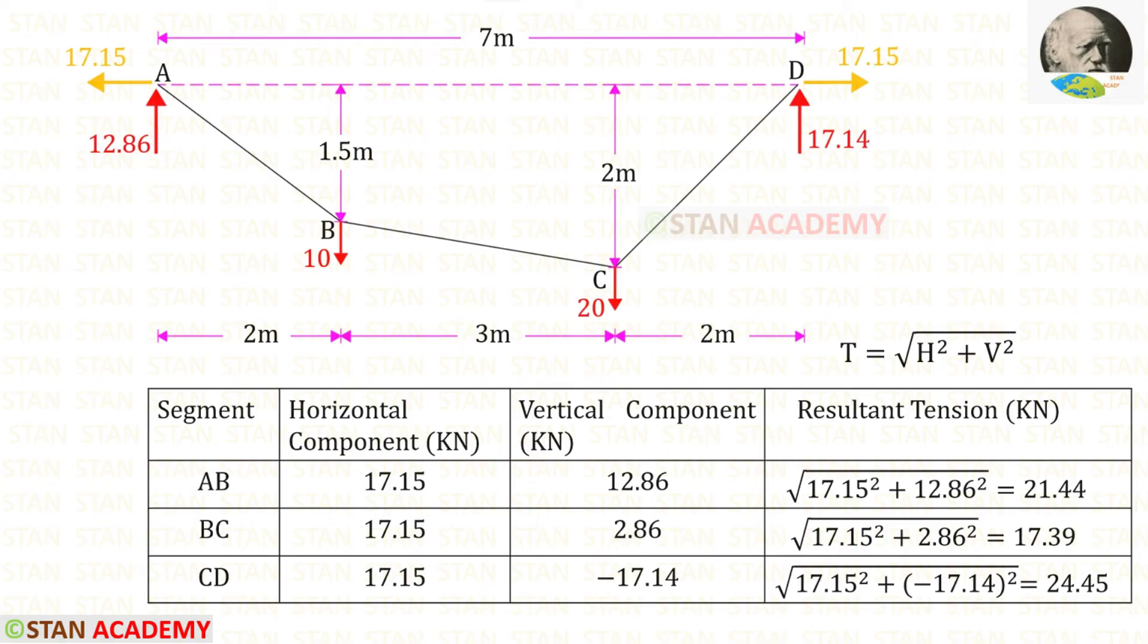Now let us find the tension in all of the segments. We know that for all of the segments the horizontal component is the horizontal thrust 17.15. The vertical component for AB is the vertical reaction 12.86. For BC it is 12.86 minus 10 so we will get 2.86.